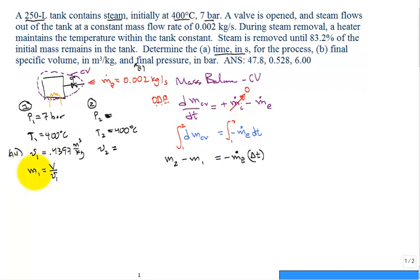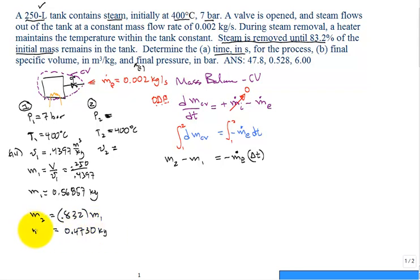Now we can stick it in with our 250 liter volume tank. So 0.250 divided by 0.4397. And we get that the initial mass that's in the tank is 0.56857 kilograms. And that key piece of information, the steam is removed until 83.2% of the initial mass remains in the tank. So the M2, the final mass is the 0.832 of the initial mass in the tank. So we can calculate that final mass. That's 0.4730 kilograms. That's our final mass of steam in the tank.